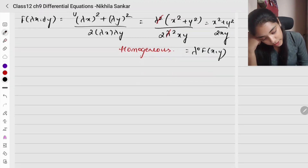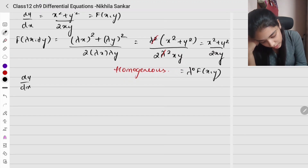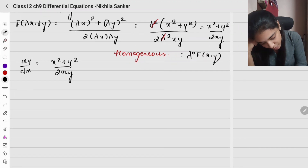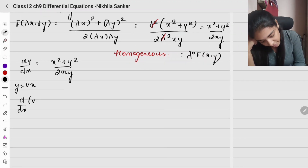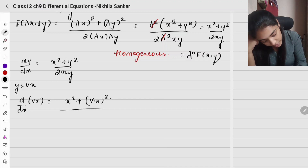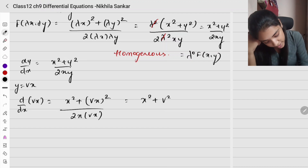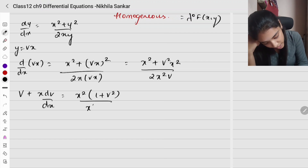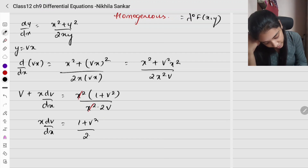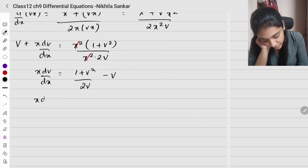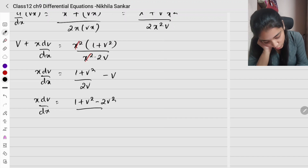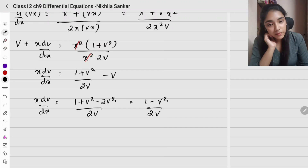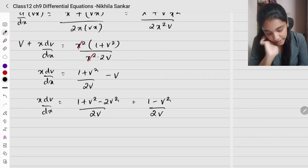To find the solution: dy/dx equals x squared plus y squared divided by 2xy. Substituting y = vx: v plus x dv/dx equals x squared plus v squared x squared divided by 2x times vx. This simplifies to x squared times (1 plus v squared) divided by 2v x squared. The x squareds cancel. So x dv/dx equals (1 plus v squared)/(2v) minus v, giving x dv/dx equals 1 minus v squared divided by 2v.